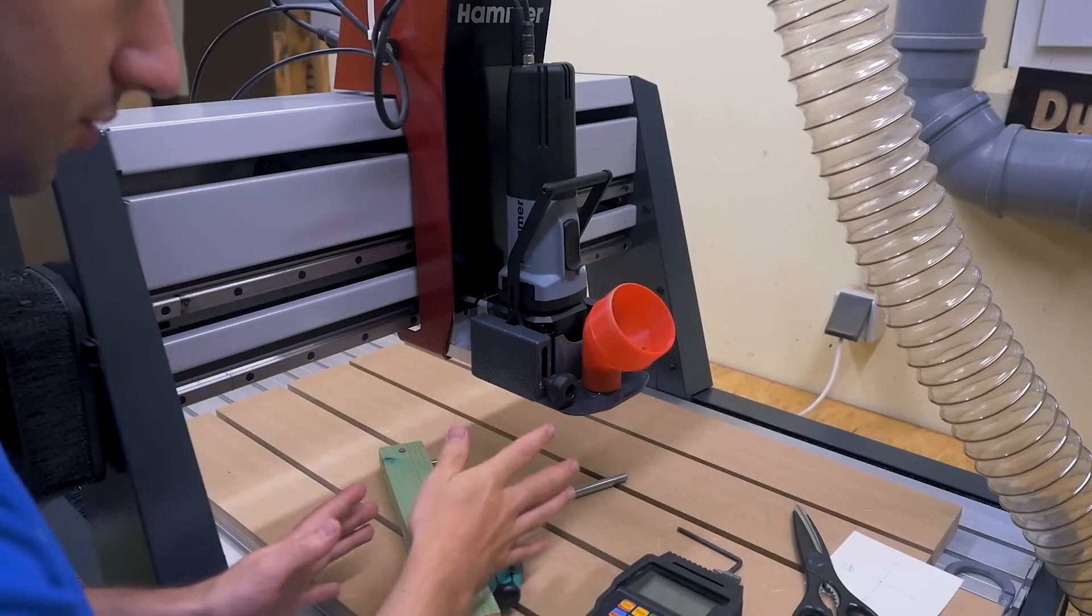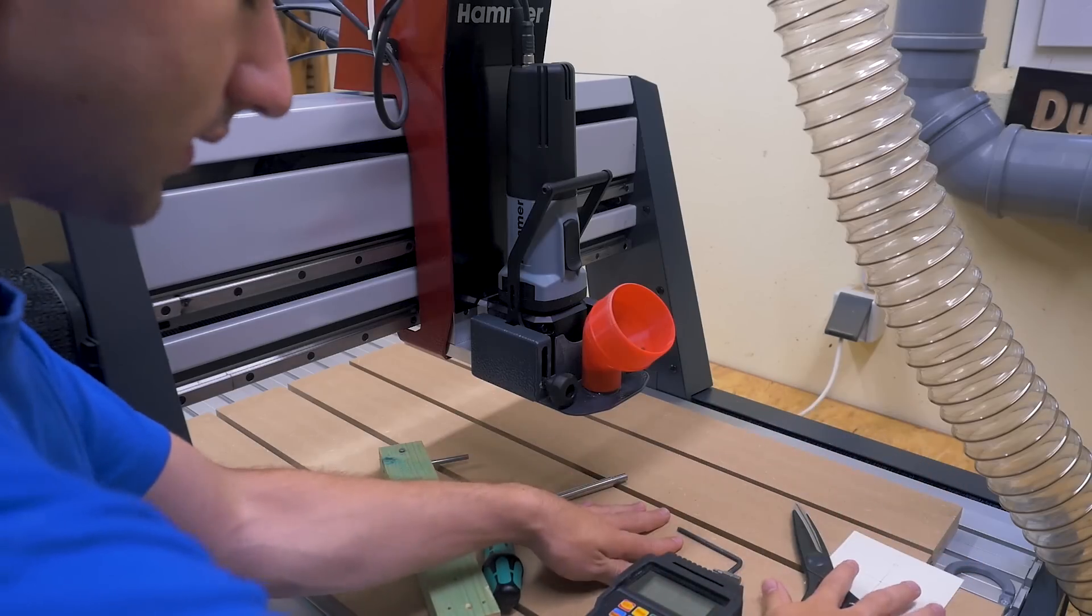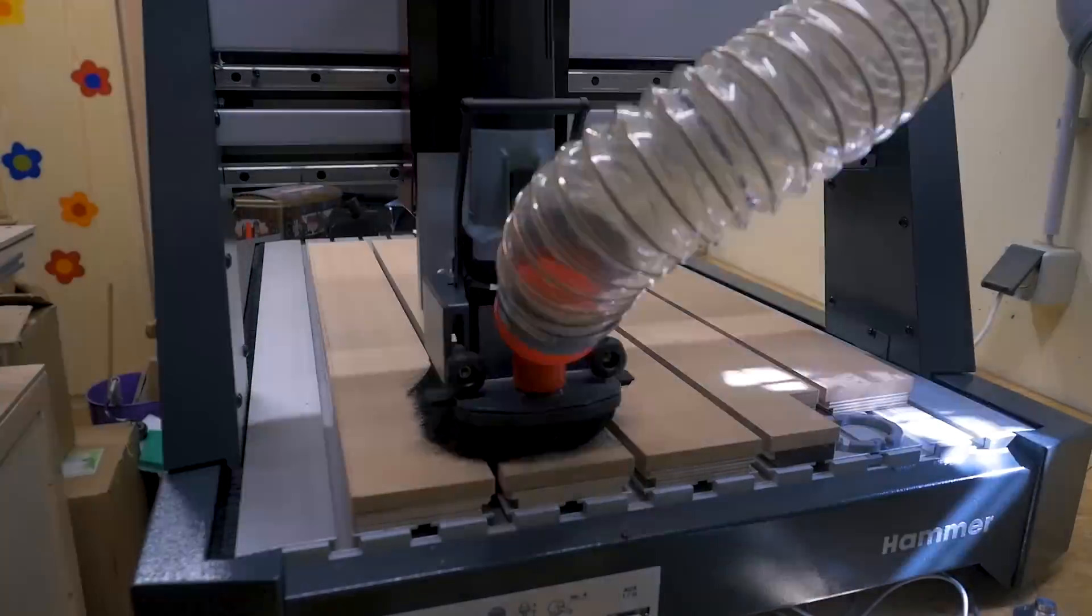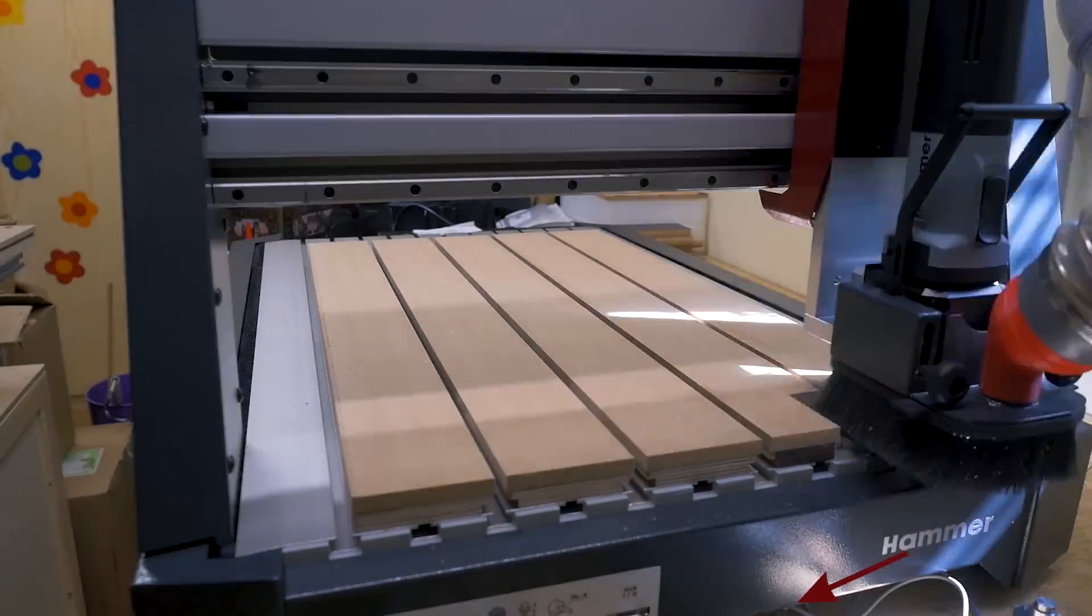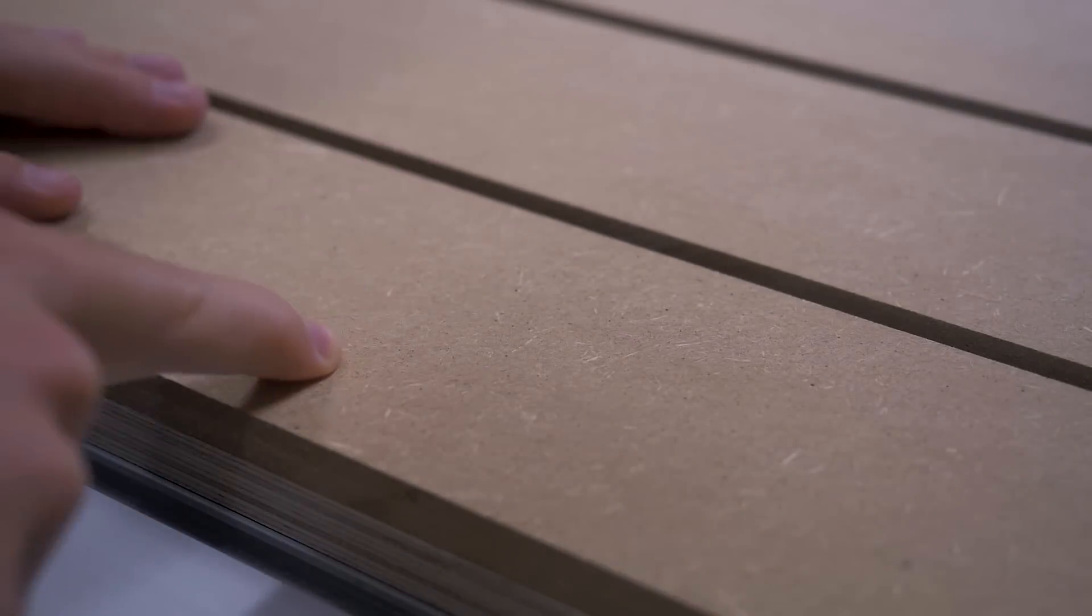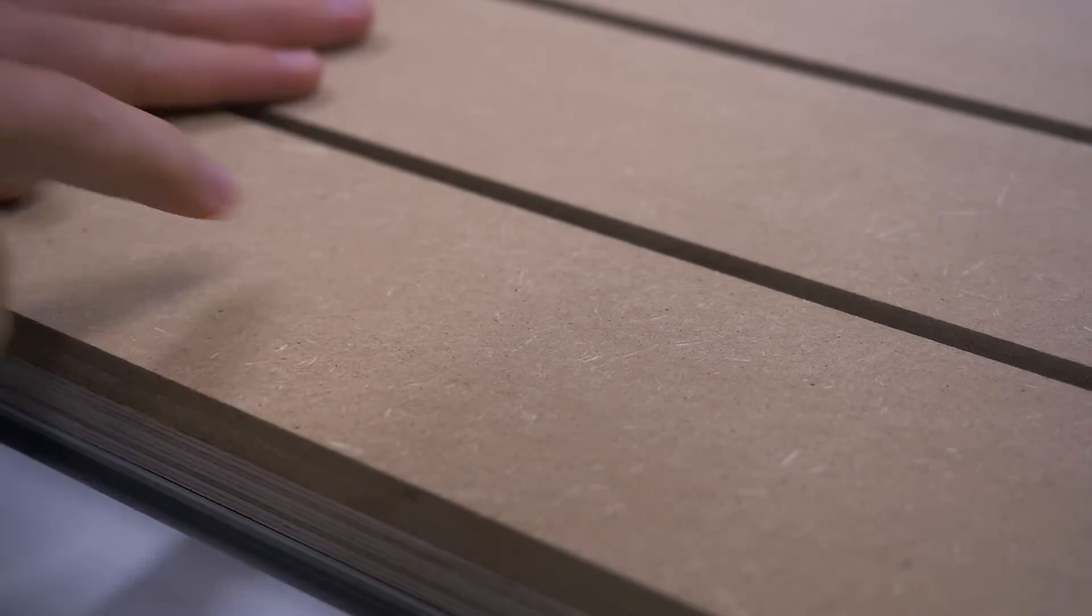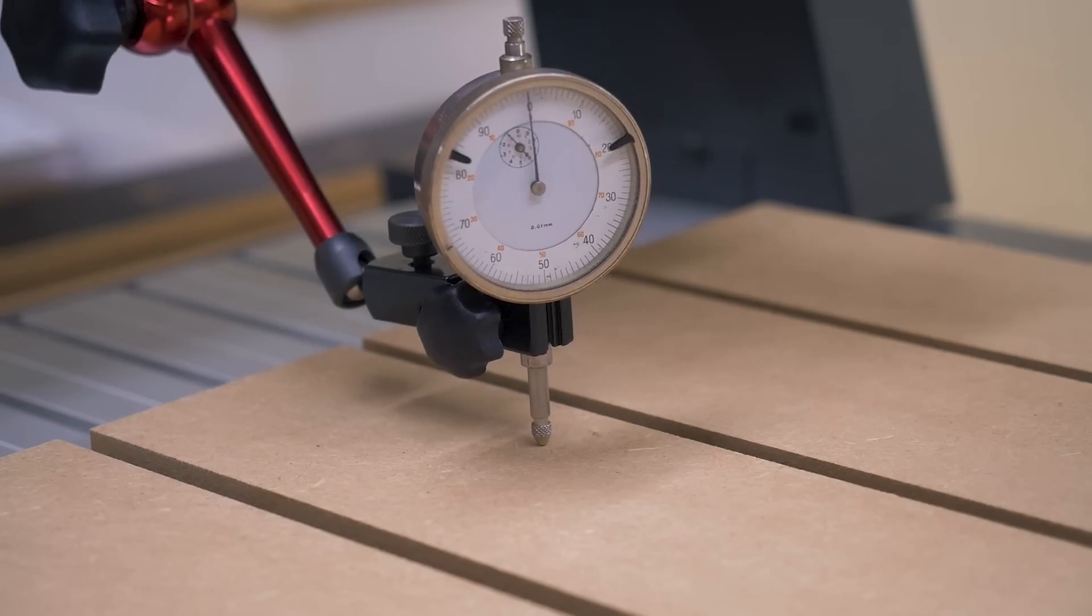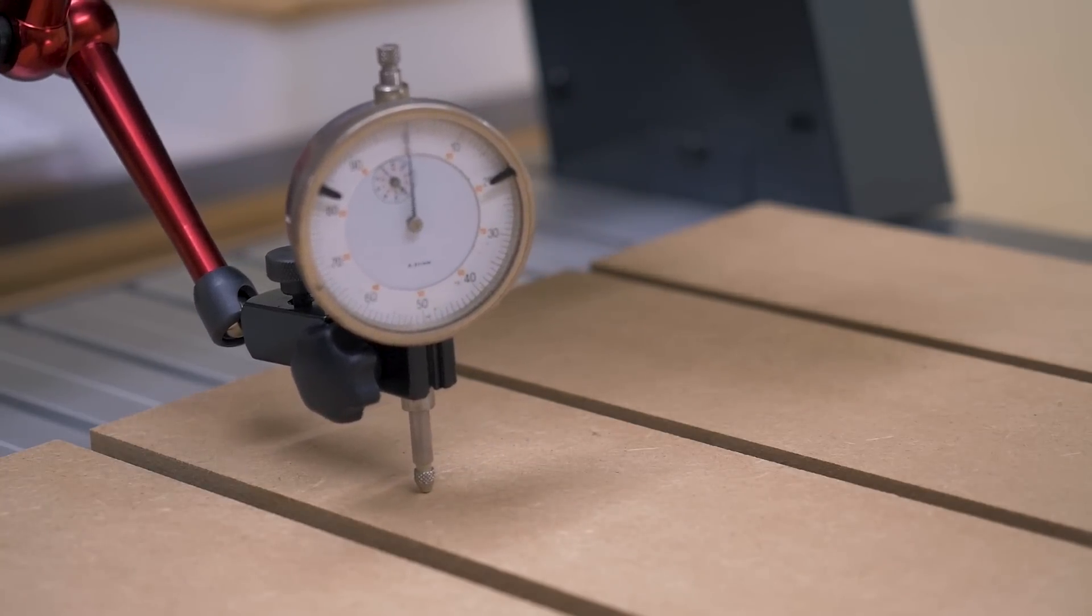So the tramming should be done, and with that now I can resurface the whole spoilboard and then I shouldn't see any more visible lines. Okay, visually there are no more lines and I also can't feel any. I'm pretty happy with that. If we look at it with a dial indicator there are no jumps. Of course there's a little bit of variation because the surface is still just MDF.